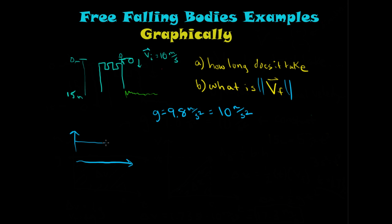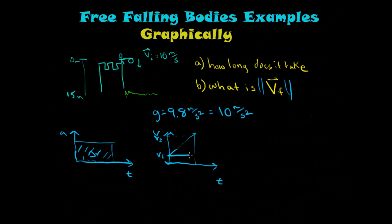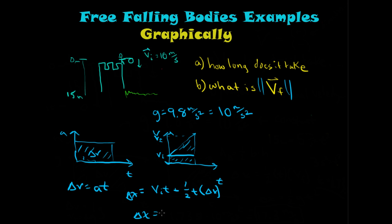Acceleration is constant, so we have the same acceleration-vs-time graph. On the velocity-vs-time graph, since acceleration is constant, velocity is linear — but this time it starts at an initial velocity vi and increases to the final velocity. The area under the curve has two parts: vi·t (the rectangle) plus one half times t times the change in velocity (the triangle), where the change in velocity equals a·t. So displacement equals vi·t plus one half·a·t².